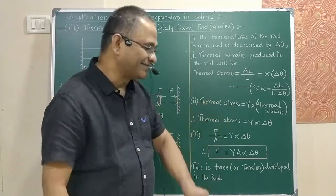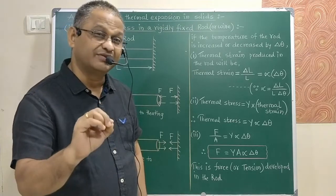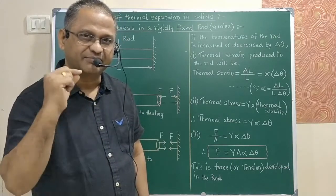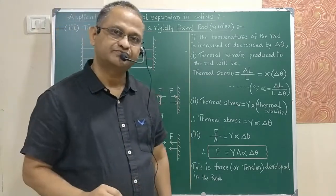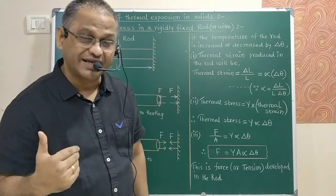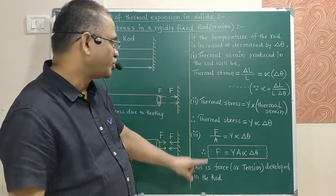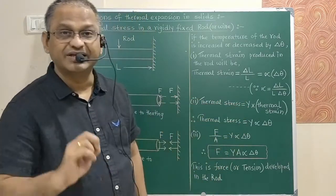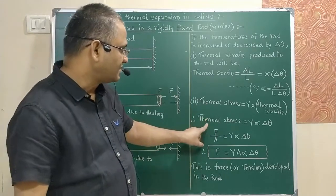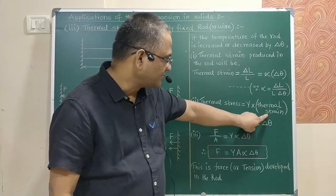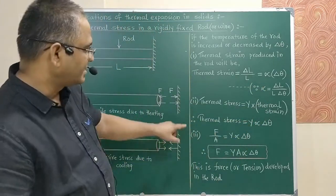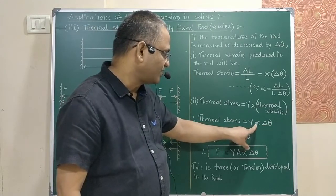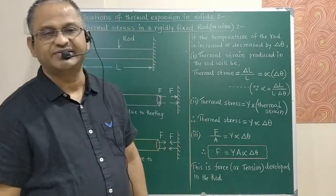According to Young's modulus, stress = Y × strain. Therefore, thermal stress = Y × thermal strain = Y × alpha × delta-theta, where Y is Young's modulus, alpha is the coefficient of linear expansion, and delta-theta is the change in temperature.